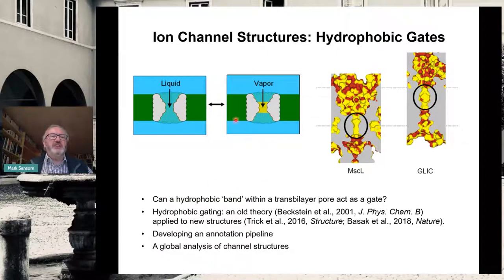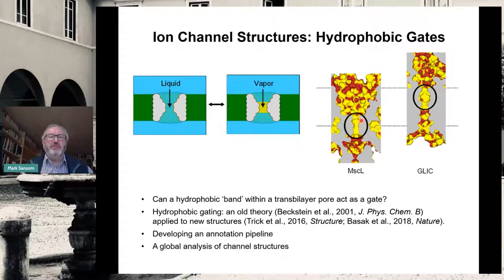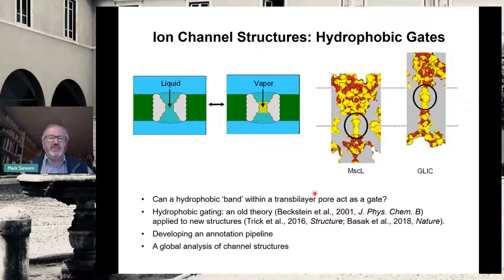But under certain circumstances, if this central region is sufficiently narrow and sufficiently hydrophobic, then it won't support water stably in the liquid state, but rather you will have what's sometimes referred to as a vapor gap, or a dry region that is empty of water molecules. Our basic question is, can such a band of hydrophobic residues act as a gate in such a pore, by expelling water, and so providing an energetic barrier to ion permeation?